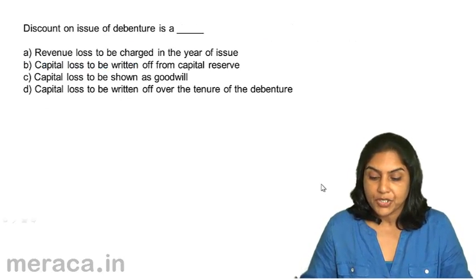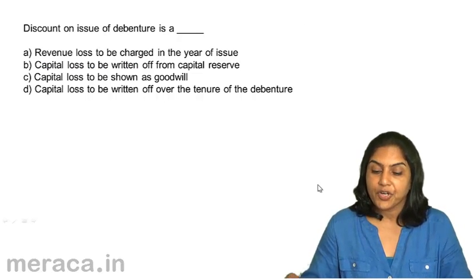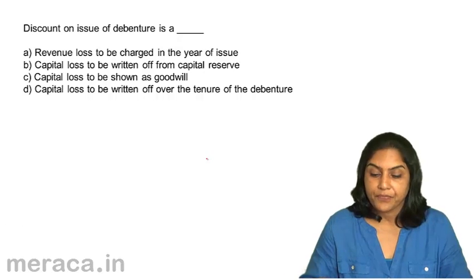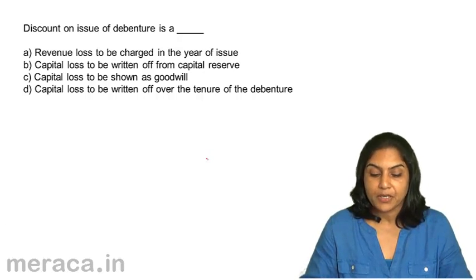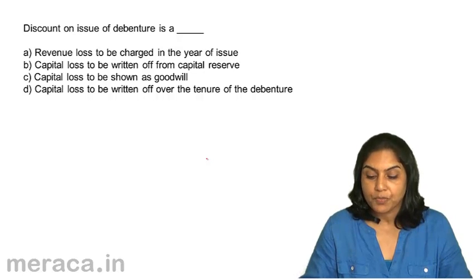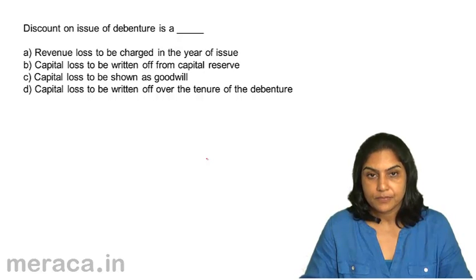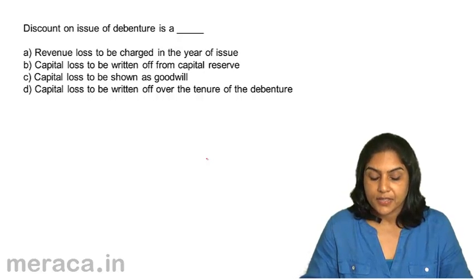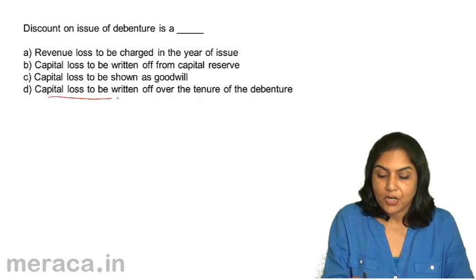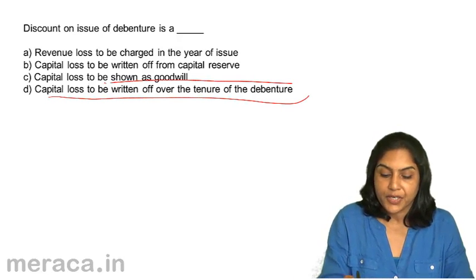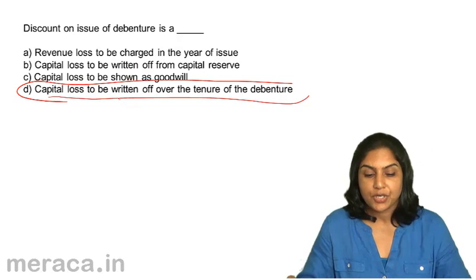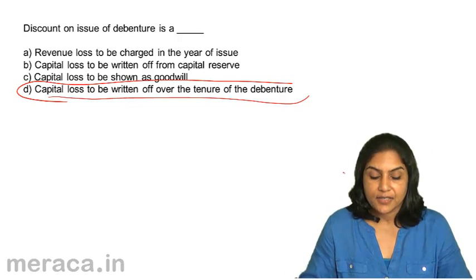Discount on issue of debentures is a: A. Revenue loss to be charged in the year of issue, B. Capital loss to be written off from capital reserve, C. Capital loss to be shown as goodwill, D. Capital loss to be written off over the tenure of the debenture. The correct answer is D — capital loss to be written off over the tenure of the debenture.